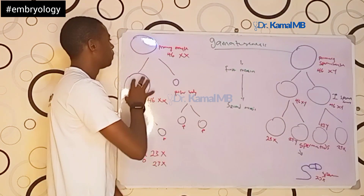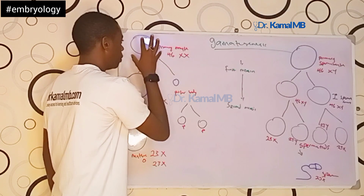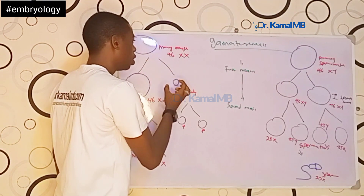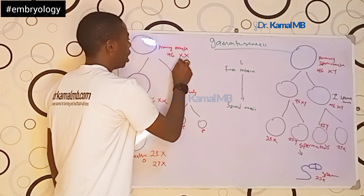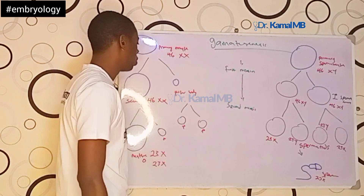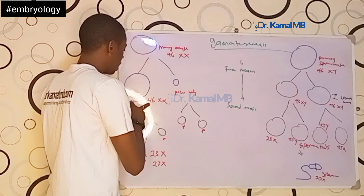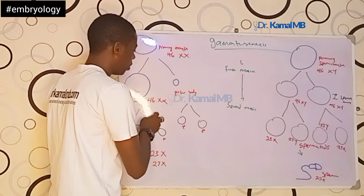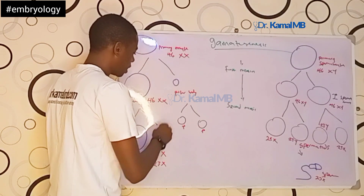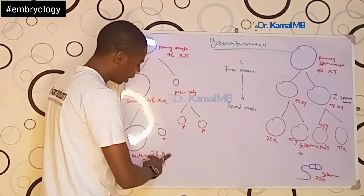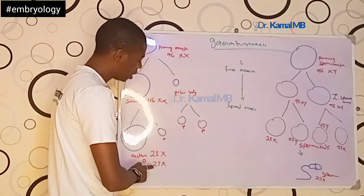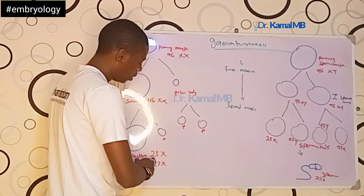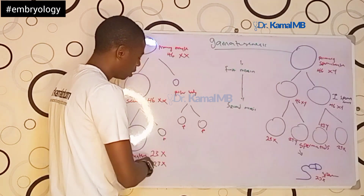If you want to talk about the female, the primary oocyte has a chromosome of X and X. The secondary oocyte also has a chromosome of X and X.